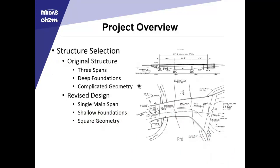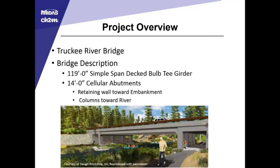A little bit on the structure selection. The original structure had three spans with deep foundations and pretty complicated geometry. A portion of the bridge supported a traffic circle, and that led to the wide flare and nonparallel girders visible on the left-hand side. So the design was essentially revised to rely on a single main span with shallow foundations and square geometry. That main span was 119 feet long, simple span, decked bulb T-girders with 14-foot clear opening cellular abutments. They had the retaining wall toward the embankment and four columns toward the river, and that's what led to the torsional eccentricity in the transverse direction in the seismic event.